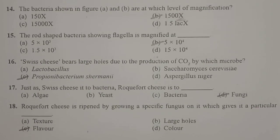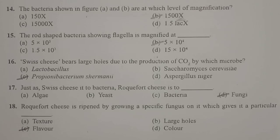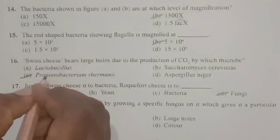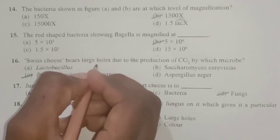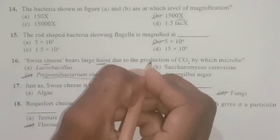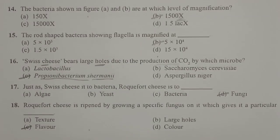Next: Swiss cheese bears large holes due to the production of carbon dioxide by which microbe? Swiss cheese is characterized by the presence of large holes. The reason for these large holes is the production of large amounts of carbon dioxide by a bacterium known as Propionibacterium sharmanii. Propionibacterium sharmanii is the specific microbe that forms large holes in Swiss cheese by producing large amounts of carbon dioxide.